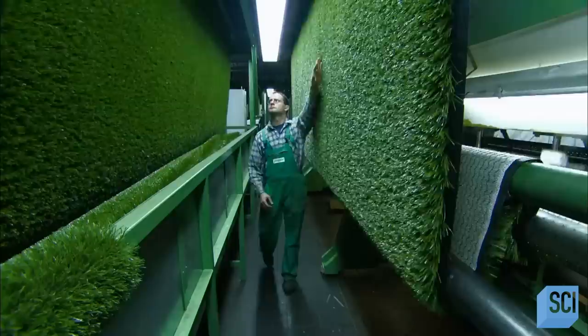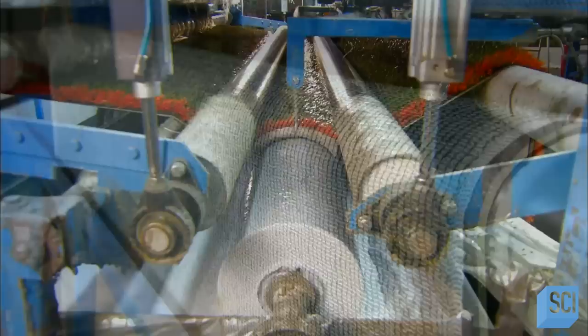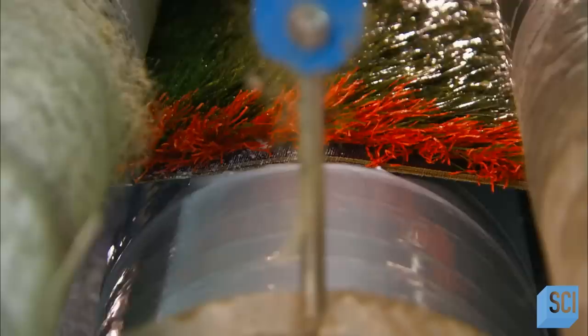An inspector examines the turf to make sure the yarns are even. Then, machinery moves it forward to a coating roller. The roller picks up adhesive from a trough below and applies it to the backing of the turf as it moves across. This binds the looped web of artificial grass to the backing.